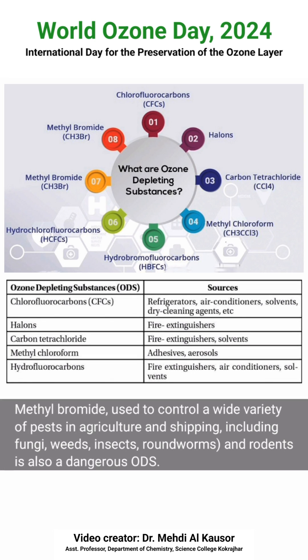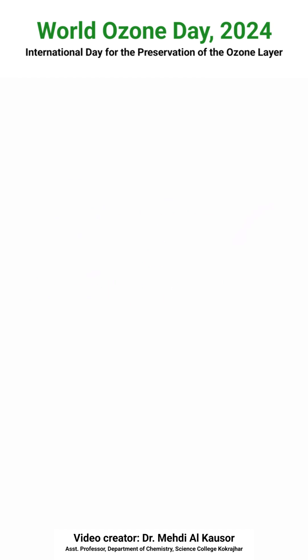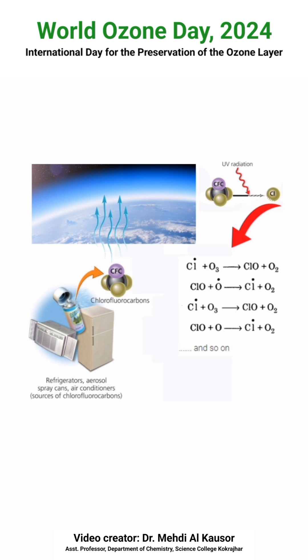There are many chemical compounds which contribute to ozone layer depletion, also called ozone depleting substances or ODS. ODS includes chlorofluorocarbons (CFCs), halons, carbon tetrachloride, methyl chloroform, hydrocarbons, and methyl bromide. Let us discuss how these chemicals deplete the ozone layer with two examples.